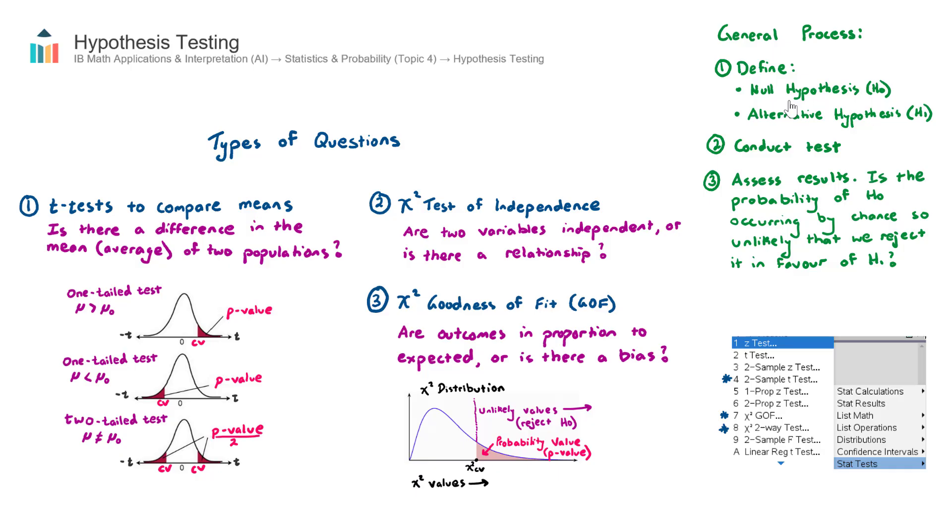Now the logical question is, well, how small does the probability need to be in order to reject it? And the answer to that question is we compare it against the significance level. And for all three of these questions, you'll be given a significance level.